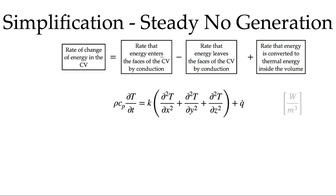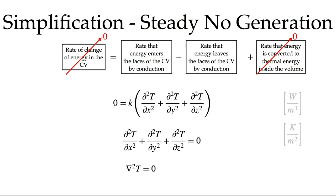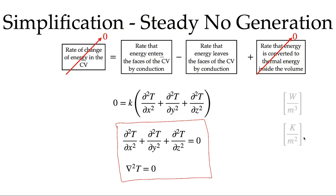If the system is both steady and has no generation, both the storage and generation terms are eliminated. We are left with the expression: K·∇²T = 0, or simply ∇²T = 0 after dividing by K — the Laplacian of temperature equals zero. Note that this equation has units of kelvins per meter squared, which must be kept in mind when using it.